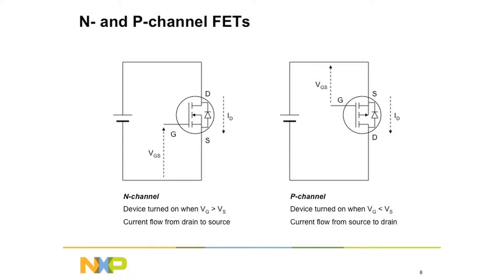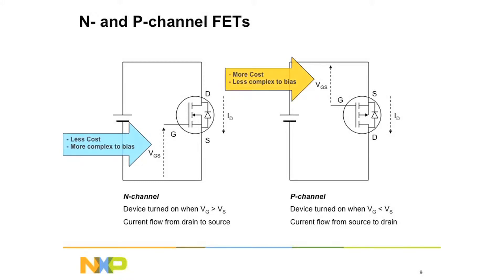The P-channel is the opposite — if you put a voltage higher than the gate, then the FET will turn on. So there are two different ways of flipping the switch off and on: a high voltage or a low voltage. The real thing comes down to which one is easier to manufacture.